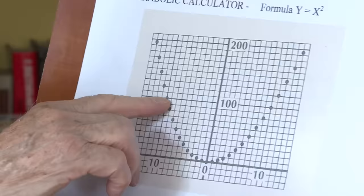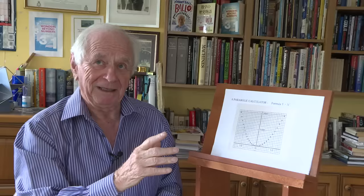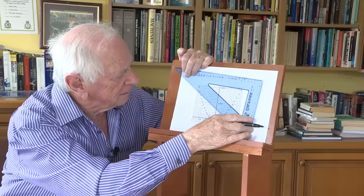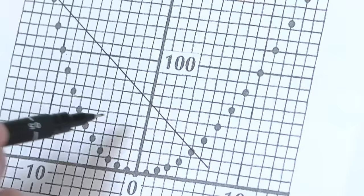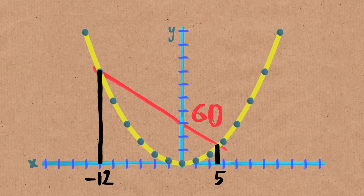This is quite remarkable because it's actually a calculator. Brady, can you give me two numbers less than 15? How about 12 and 5? So I'm going to put a line through the 12 and 5. It goes through 60. 5 times 12 is 60. So this is an automatic calculator. Isn't it great?